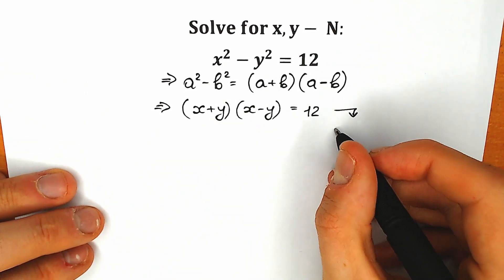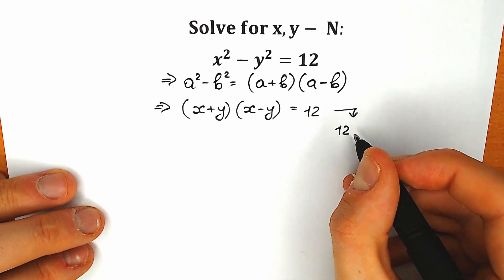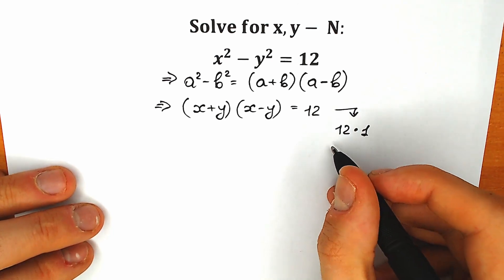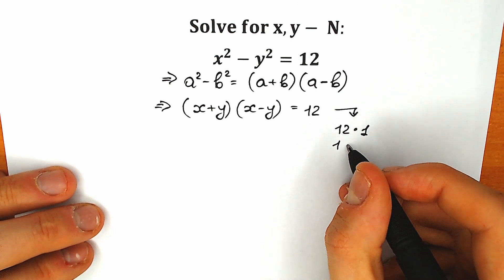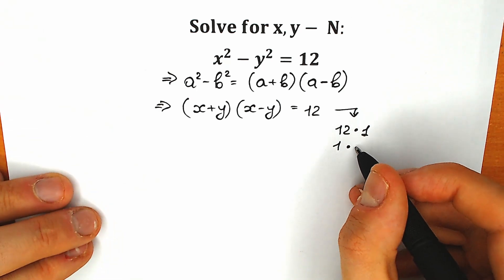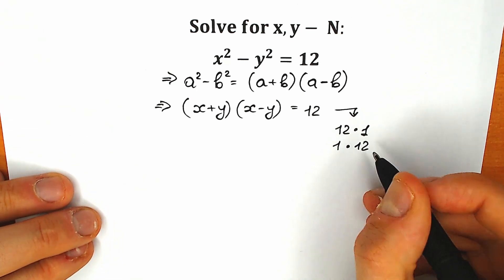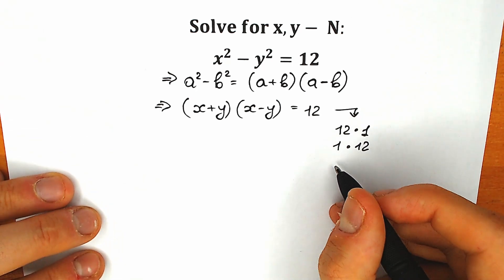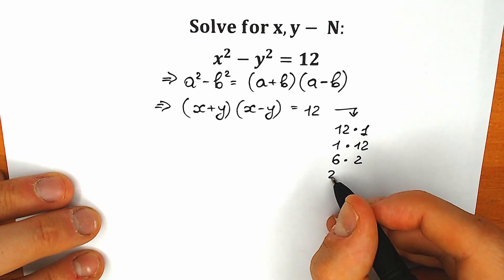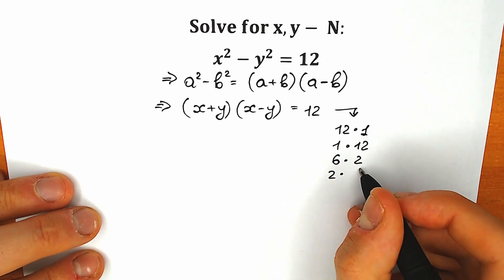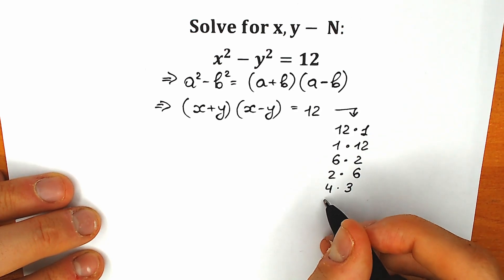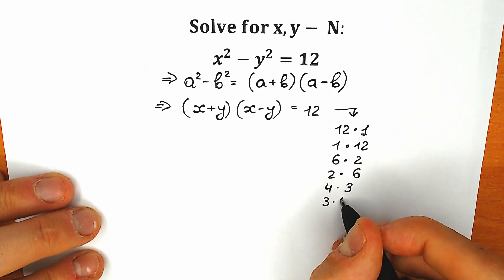The combinations are: 12 times 1, 1 times 12, 6 times 2, 2 times 6, 4 times 3, and 3 times 4.